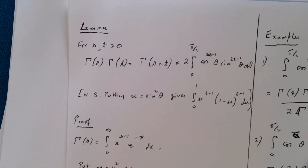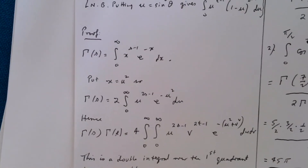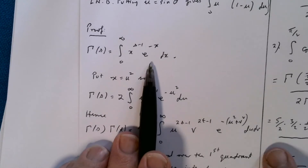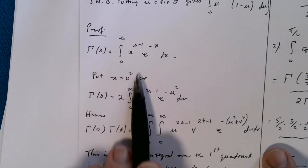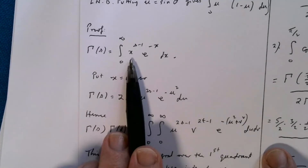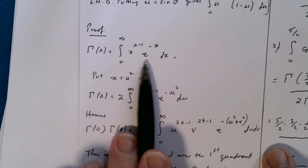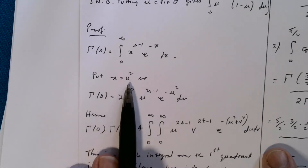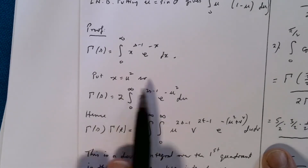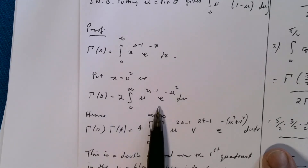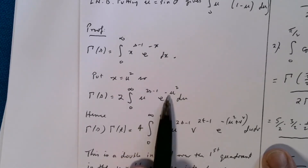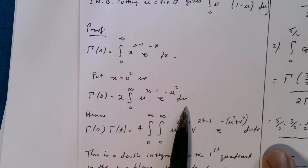The proof is not too difficult — it's quite a nice calculus exercise. Starting with the definition of gamma as the improper integral from 0 to infinity of x to the s minus 1 e to the minus x dx, I make a change of variable putting x equal to u squared. That produces twice the improper integral from 0 to infinity of u to the 2s minus 1 times e to the minus u squared du. I'll leave you to check that calculation.